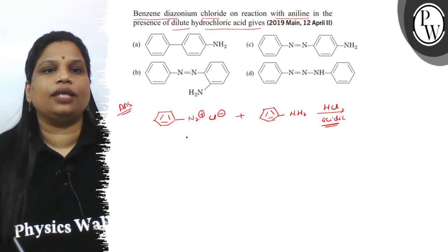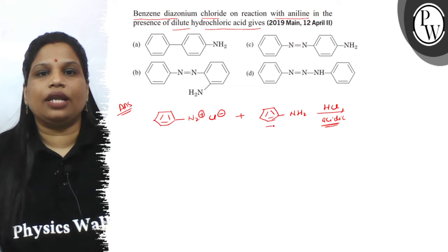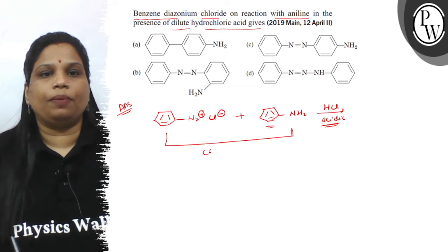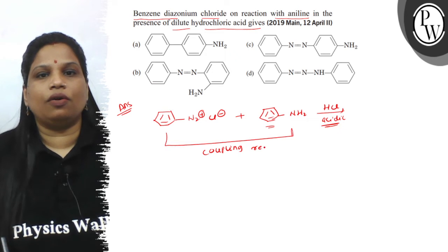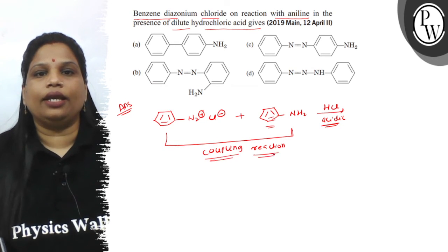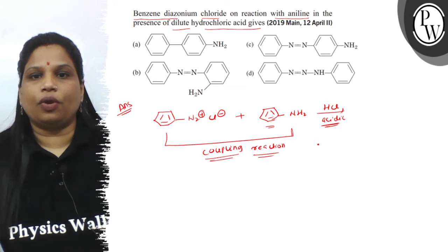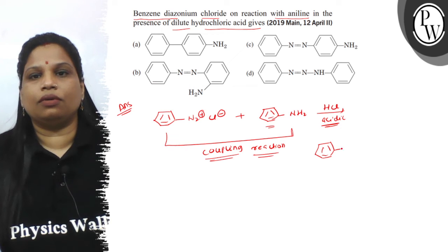When diazonium chloride is treated with aniline in acidic medium, this reaction is called coupling reaction, and the product is an azo benzene product. The product in this case is para-aminoazobenzene.